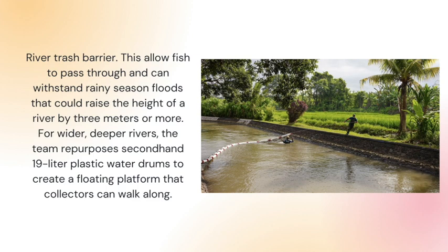I introduce you to river trash barriers. River trash barriers would stop plastic from reaching the other side of the river, making it easier to collect. They allow fish to pass through and can withstand rainy season floods that could raise the height of the river by three meters or more.